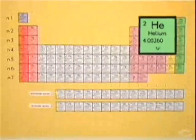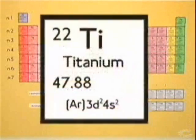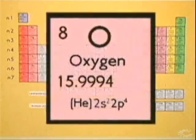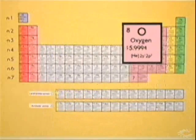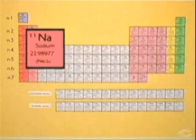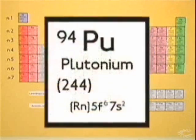Chemists can tell almost at a glance how an element will interact with other elements simply by looking at the location of the element on the periodic table.